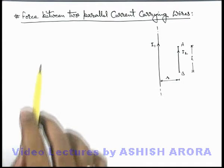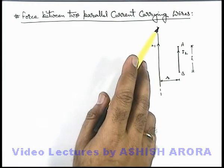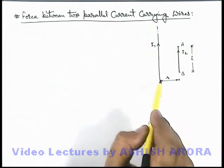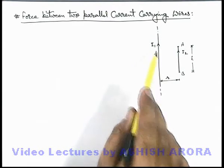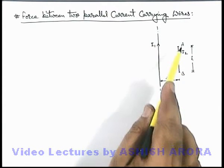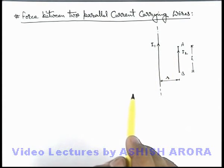Let us discuss the force between two parallel current carrying wires. This figure shows a very long straight wire which carries a current i₁, and at a distance r from it another parallel wire AB of length l is placed carrying a current i₂.